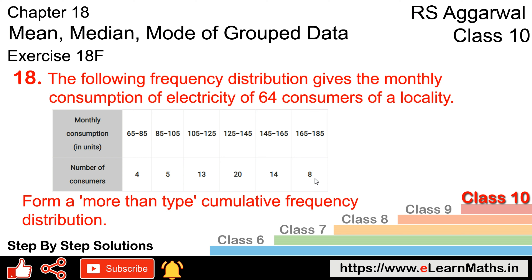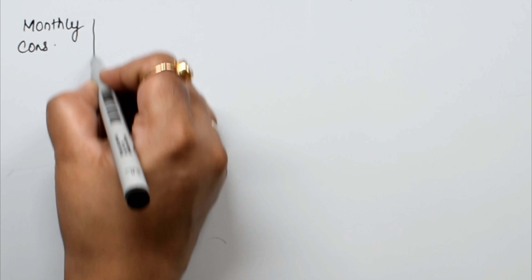Let's do question number 18 of exercise 18F, that is mean, median and mode of grouped data. The following frequency distribution gives the monthly consumption of electricity of 64 consumers of a locality. We have given monthly consumption and number of customers.